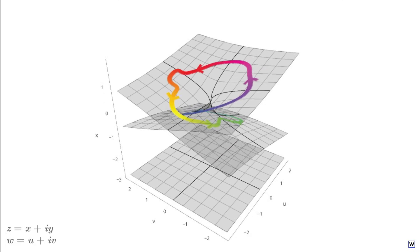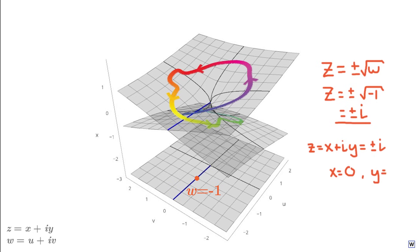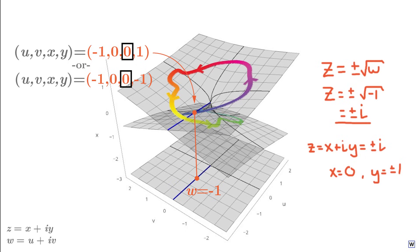This intersection happens along the negative real axis of our W plane. Let's consider a point on this axis, W equals minus 1. Plugging in negative 1 for W yields two solutions, Z equals plus i and Z equals minus i. These two solutions are clearly different, but they have the same real part, zero. Since we're only visualizing the real part of Z, we have no way of seeing that these are in fact different points.